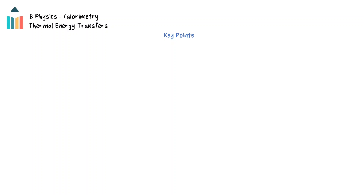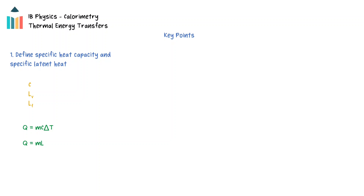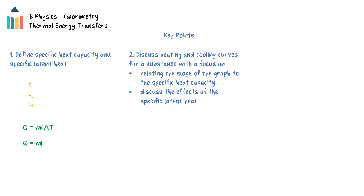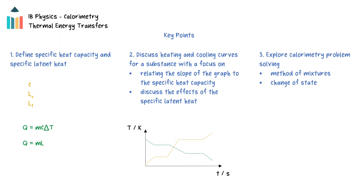In this video we will explore calorimetry and work through some sample problems. First, the definitions of specific heat capacity and specific latent heat will be introduced and the formulas for thermal energy transfer discussed. Then the heating curves will be interpreted with a focus on these concepts. Finally, calorimetry will be explored with sample problems to demonstrate the key points.